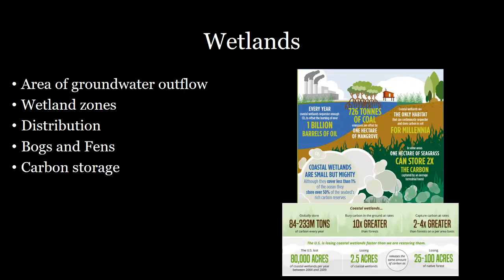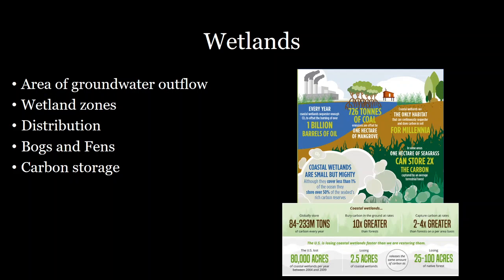The reason why wetlands are so important is because of their incredible ability to store carbon. Every year, wetlands sequester enough CO2 to be equal to a billion barrels of oil — equivalent to one acre of mangroves being equivalent to 726 tons of coal. To put that into perspective, wetlands can bury carbon at rates 10 times greater than forests, because the soil they create is so rich in carbon, and they can capture carbon at two to four times faster rates as well. Preserving wetlands and making sure that they grow is a really important strategy for reducing our carbon footprint, and the growth of wetlands is a suggestion made by the IPCC in order to sequester as much CO2 from the atmosphere as possible.